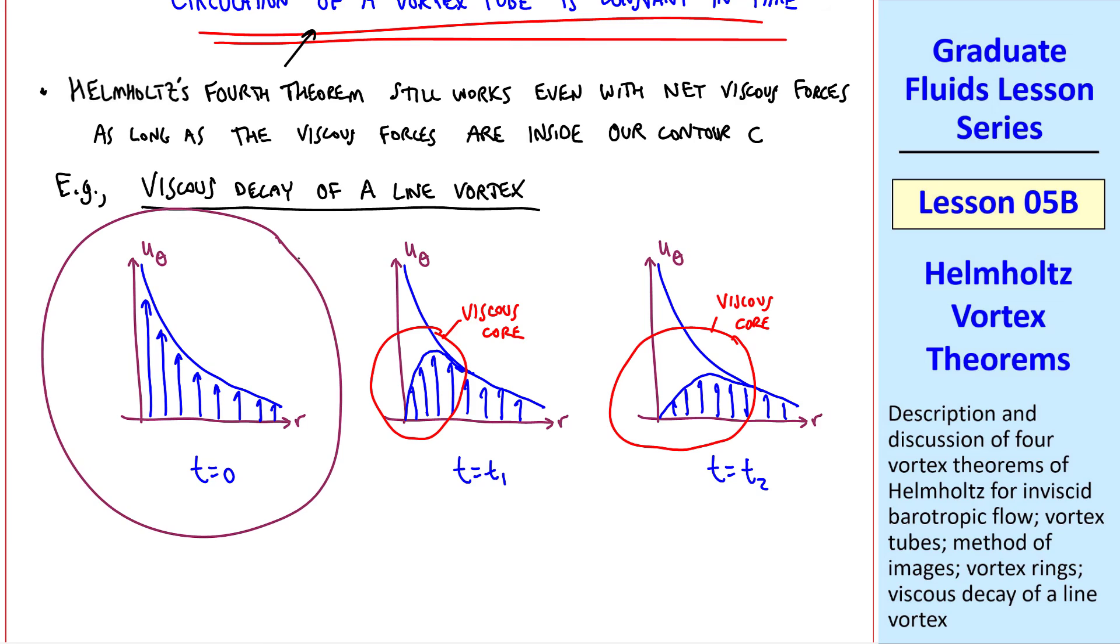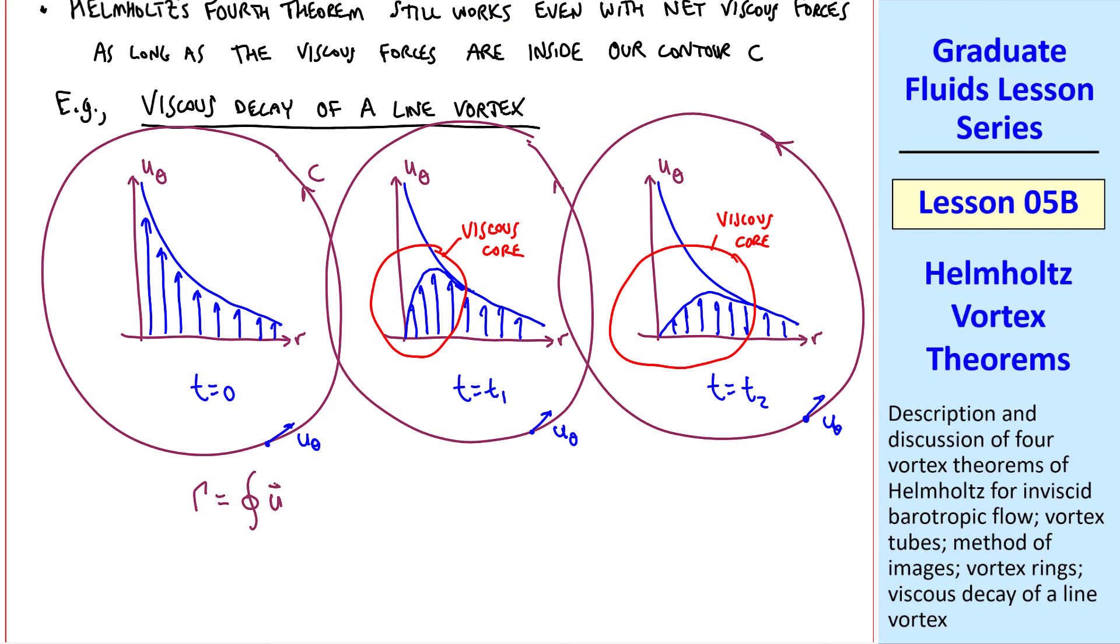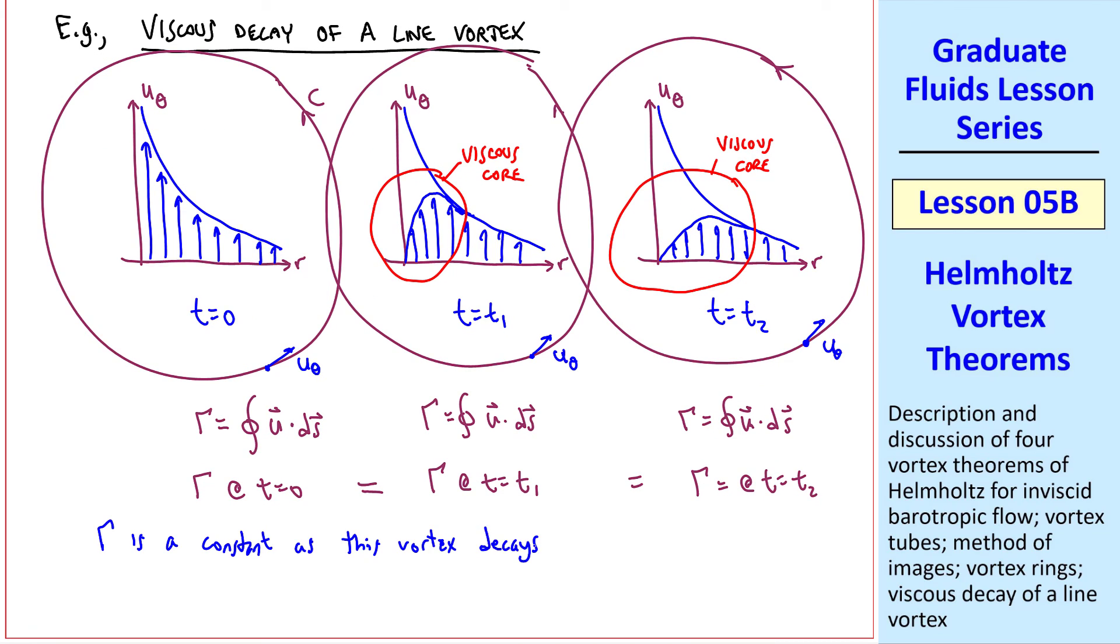At a later time, the viscous core grows but still blends into the outer flow. The point is that if we take a closed contour C, as long as C is outside the viscous core, it sees the exact same u theta at the exact same location, since this is part of the outer core in any of these three diagrams. And when you integrate gamma equal integral of u dot dS, we see that gamma at t equals zero must equal gamma at t equals t1 and t equals t2. Gamma is a constant as this vortex decays in time, provided that contour C is outside the viscous core. Viscous effects grow with time, but far enough away, the effects have not reached our contour yet. The point is that although Helmholtz's theorems apply to inviscid flow, you can have regions where viscous effects are important and dominate, but Helmholtz's theorems still apply.